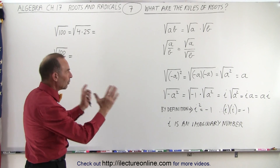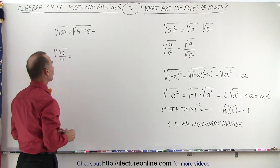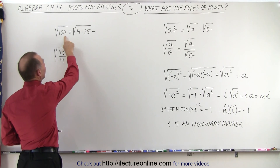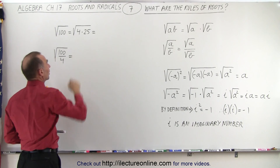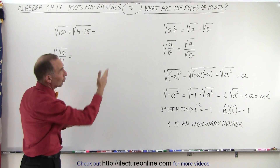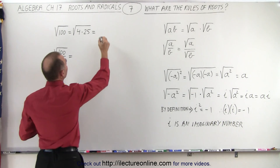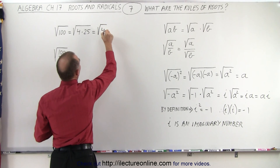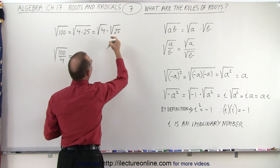Now that we know those rules, let's apply them to a couple of examples. The square root of 100 can be written as the square root of 4 times 25. And, of course, using the rule that we have, that can now be written as the square root of 4 times the square root of 25.